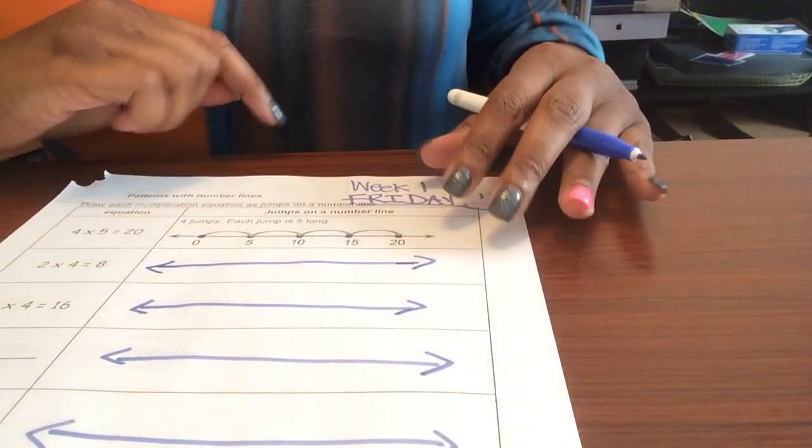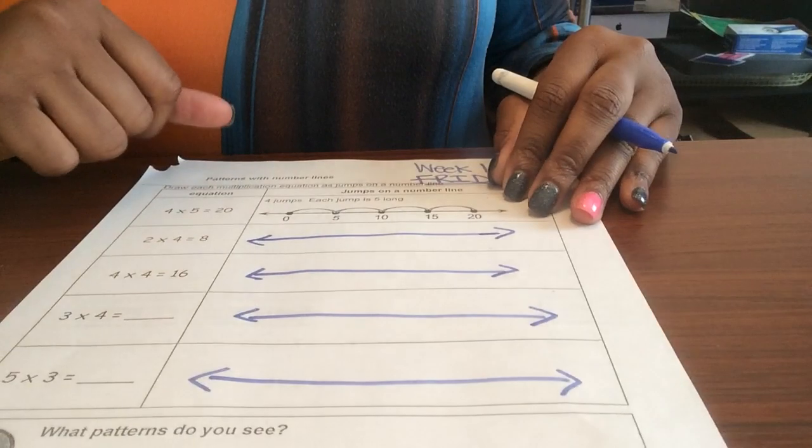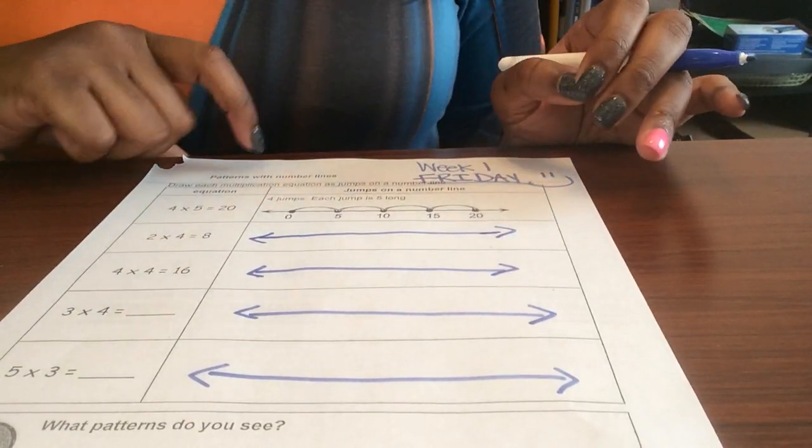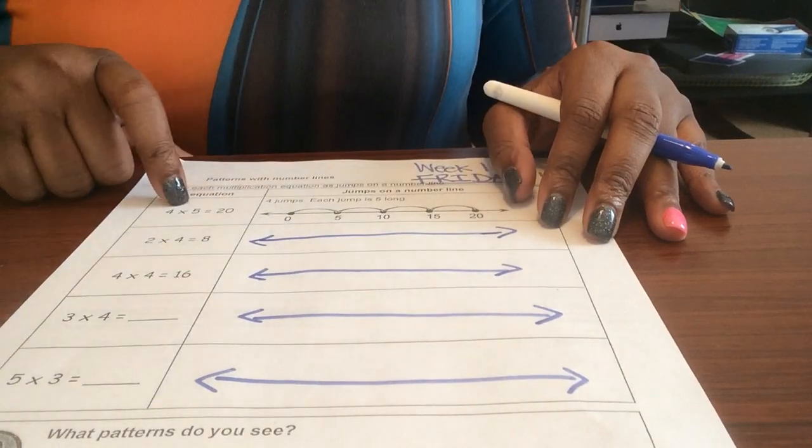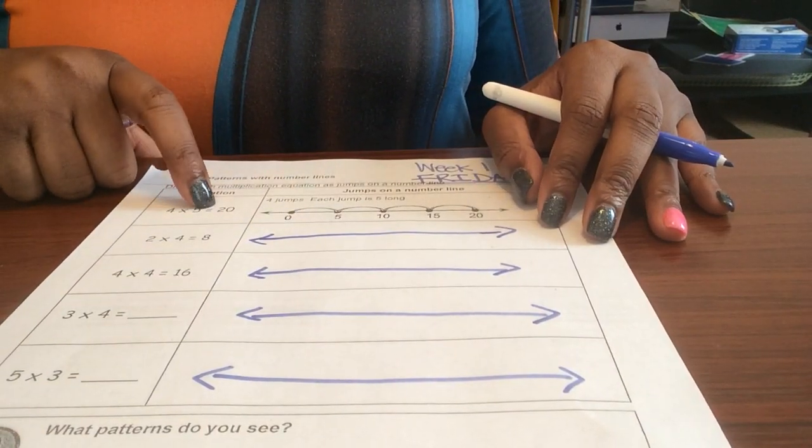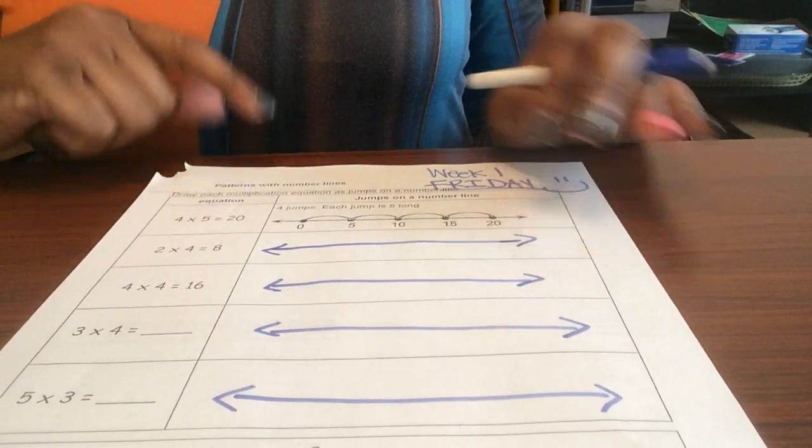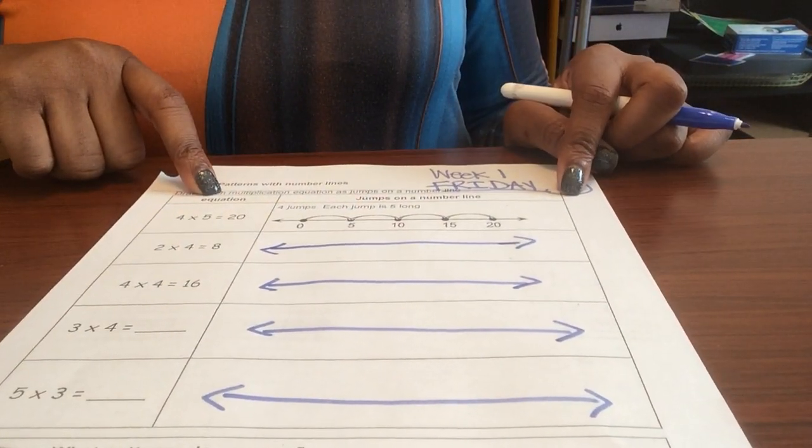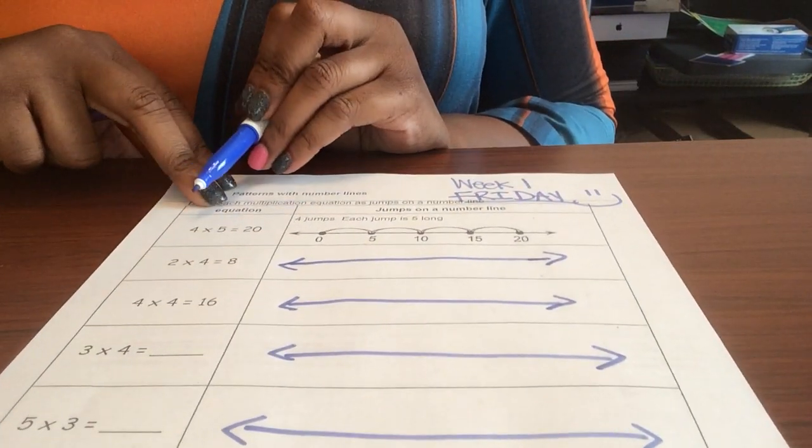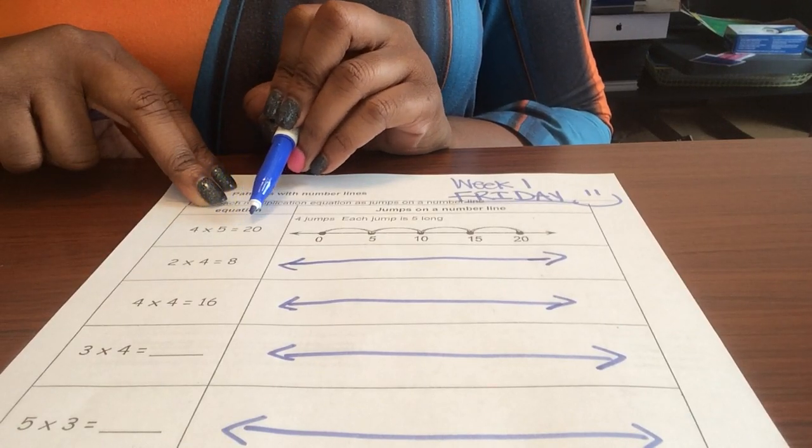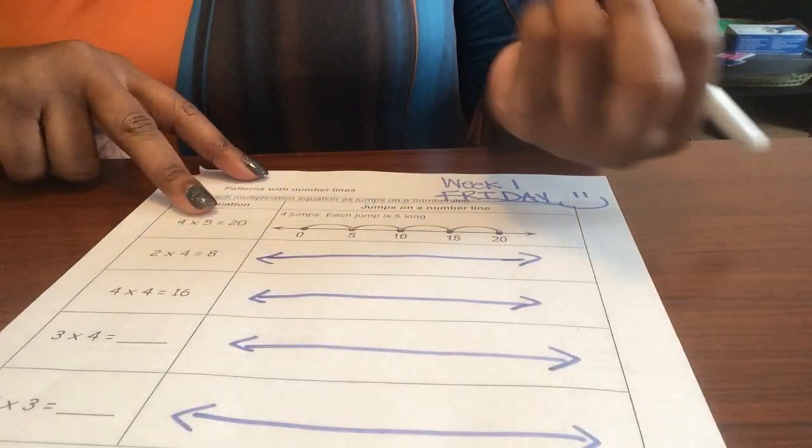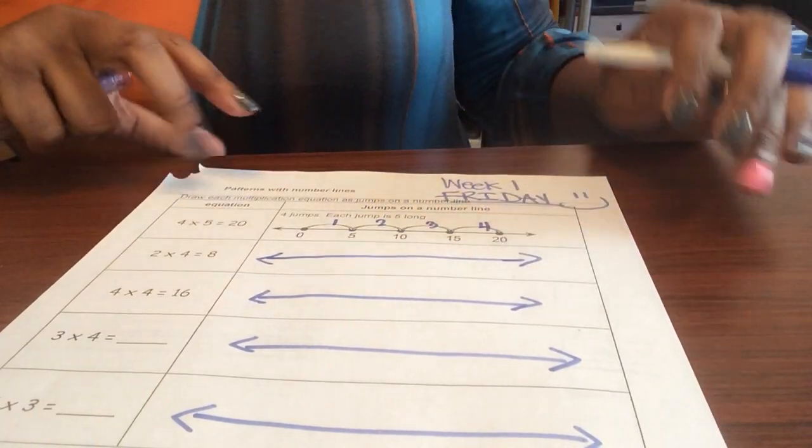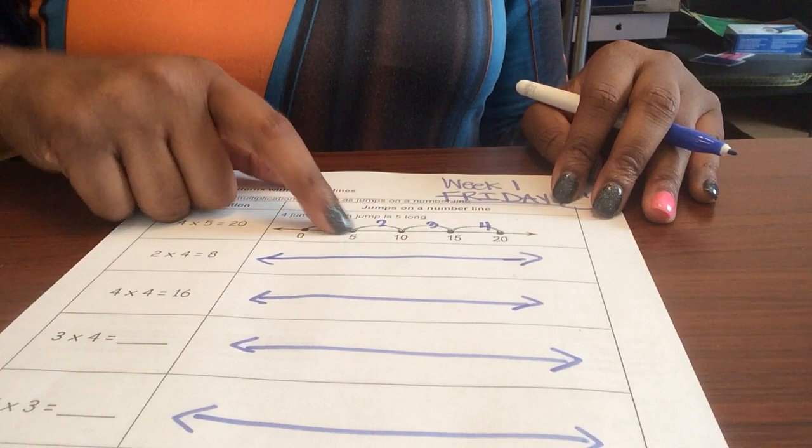So this example has an equation: four jumps of 5 equals 20. When I do number line multiplication, we read it differently than we do other multiplication. One more time, it reads four jumps of five equals 20. That means you're gonna have four jumps (one, two, three, four) and you're counting by fives.